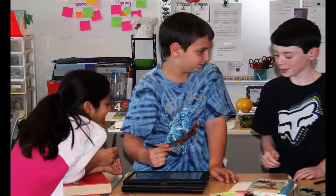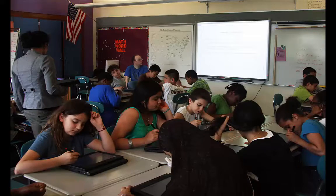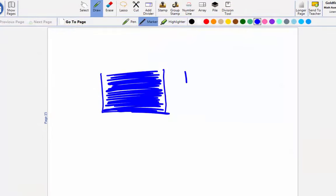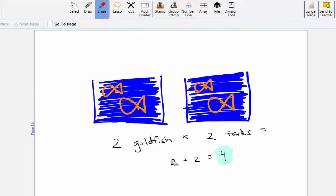Classroom Learning Partner, or CLP, provides students with tools to create representations of multiplicative structures. Students use the tablet's pen to draw, annotate, write, and highlight with a selection of colors, and easily erase their work.